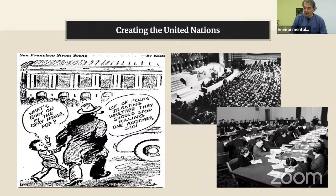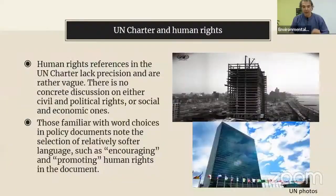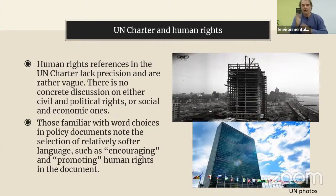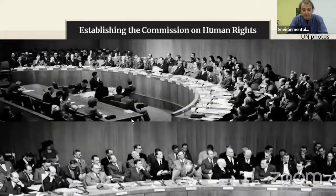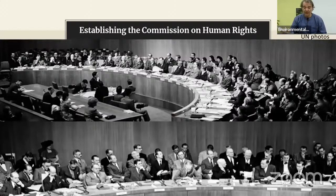The first UN General Assembly took place the next year in London. The UN Charter contains seven human rights references — they lack precision and are rather vague. There is no concrete discussion of civil and political rights or social and economic ones, as that distinction was made later. A relatively soft language is used, such as 'encouraging' or 'promoting' human rights. An important development was the establishment of the Commission of Human Rights under ECOSOC, the Economic and Social Committee, one of the six principal organs of the UN system.